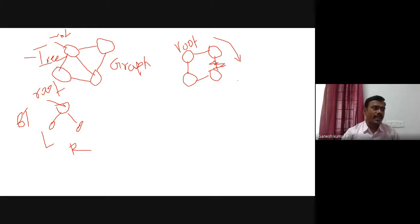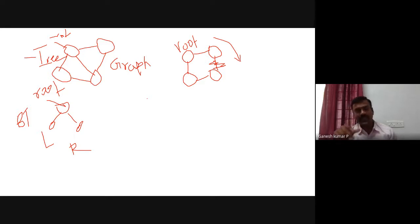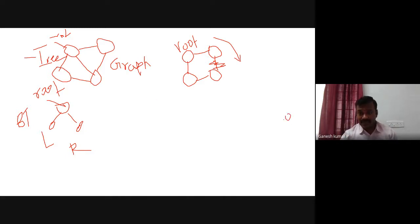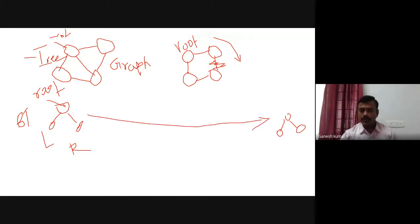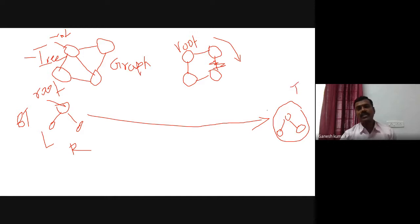There is a famous gate question: how many trees can be created from a graph, or whether any graph can be treated as a tree. In general, when a tree is closed, you may treat that as a closed graph; otherwise it is an open graph. Any tree can be treated as a graph, provided it is not closed. Even then, it is also called as a tree.